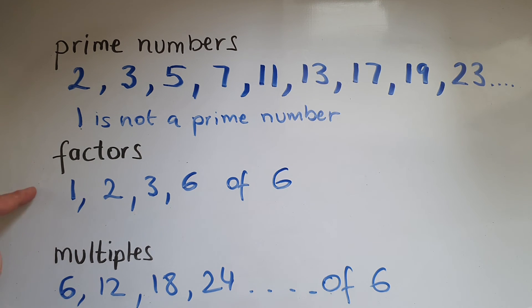If you get confused between factors and multiples, you can always link multiples to the word multiply. So you're multiplying the number that you've got to find a multiple of with one, two, three, and so on.